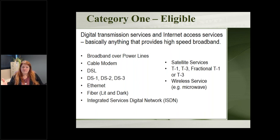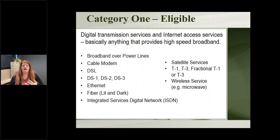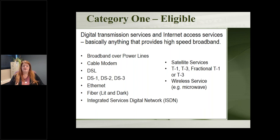Category one covers getting the internet to your library. Any kind of connection that will get high-speed broadband internet to your building is eligible — cable modems, DSL, lit and dark fiber, satellite, wireless. This is not an exhaustive list; these are just the most common ones. Anything you can use to get internet to your building is eligible under category one.